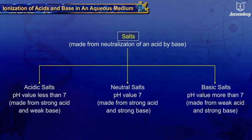The salts formed by the neutralization of an acid by base can be classified into three types, depending upon the type of acid and base. Acidic salts are made from strong acid and weak base, and the resulting solution has pH value less than 7.